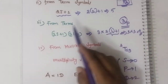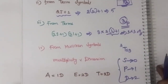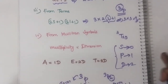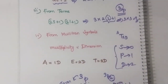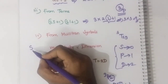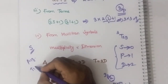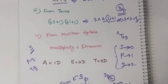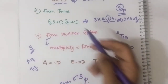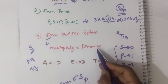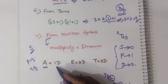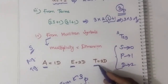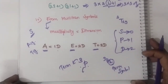For a term symbol, the formula is 2J plus 1. For a term, it is (2S+1) into (2L+1). Now suppose they are giving you a Mulliken symbol - things like A1G, T1G, T2G, and so on. These are all Mulliken symbols. If they give you a Mulliken symbol, then how can you calculate the microstate? It is very simple: multiplicity into dimension. One thing you must know is: if they give you an A term, it is 1-dimensional; if it is E, it is 2-dimensional; if it is T, it is 3-dimensional.